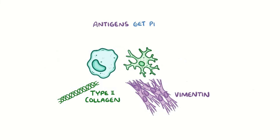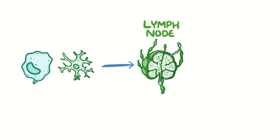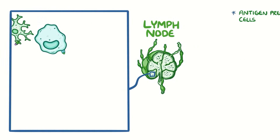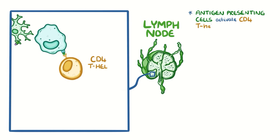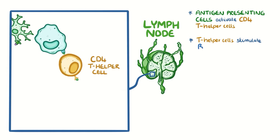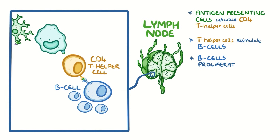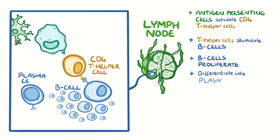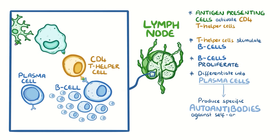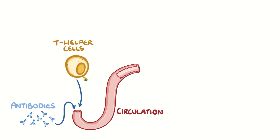The antigens get picked up by antigen presenting cells and carried to the lymph nodes to activate CD4 T helper cells. T helper cells stimulate nearby B cells to start proliferating and differentiate into plasma cells, which produce specific autoantibodies against these self-antigens. In rheumatoid arthritis, T helper cells and antibodies enter the circulation and reach the joints.